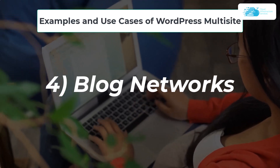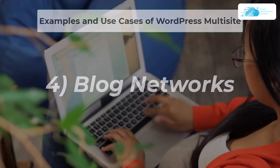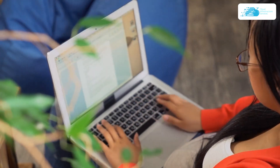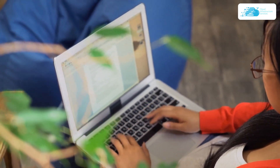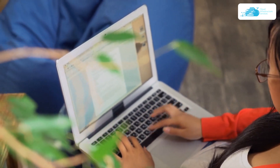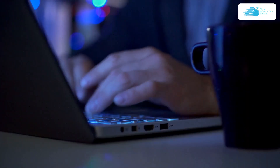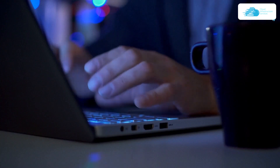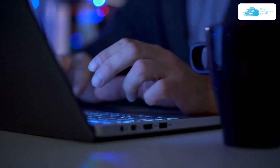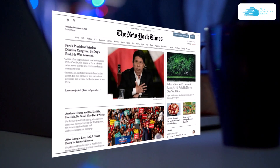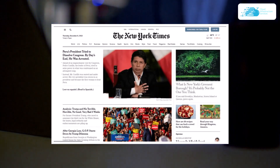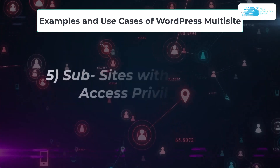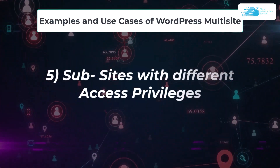Number four, we have blog networks. No matter how you use it, WordPress multi-site primarily focuses on blog networks used by online publications. An entity creates multiple blogs relating to the same or different topics using the multi-site installation. An example for this can be The New York Times blog.